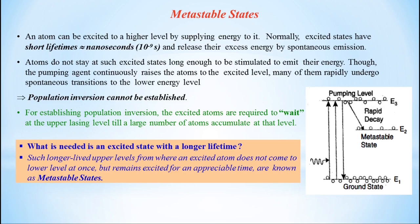Energy levels from where an excited atom does not come to a lower level at once but remains excited for an appreciable time are known as metastable states. The lifetime of an atom at a metastable excited state is longer than the normal excited state lifetime of 10⁻⁹ seconds. This metastable state lies between E1 and E3. E3 is the pumping level, the excited state. E1 is the ground state. This E2 state, which has a longer lifetime, is called the metastable state.